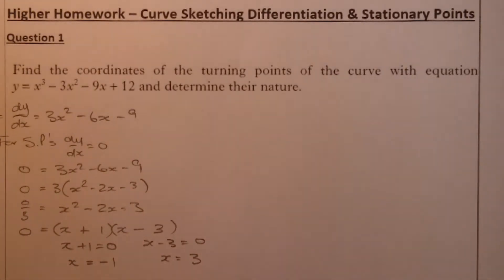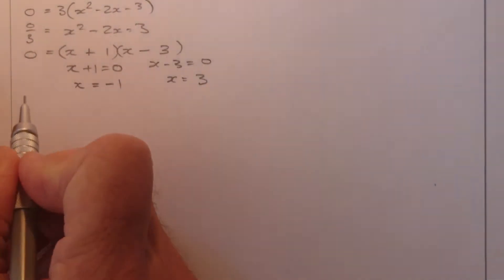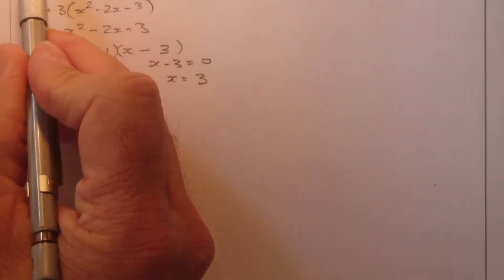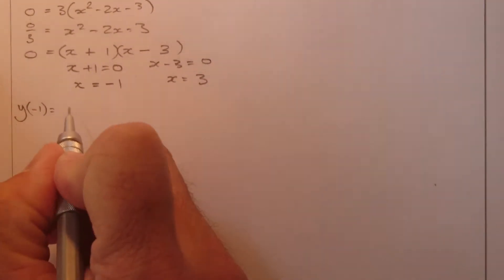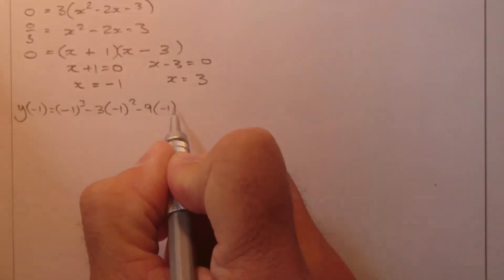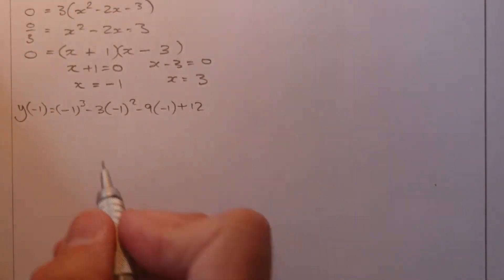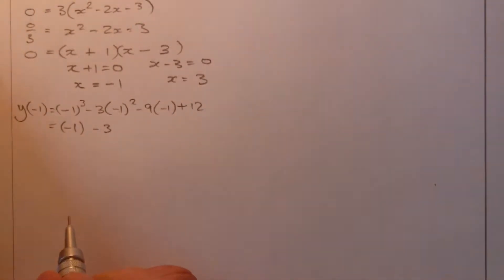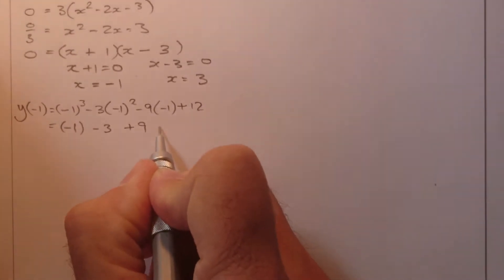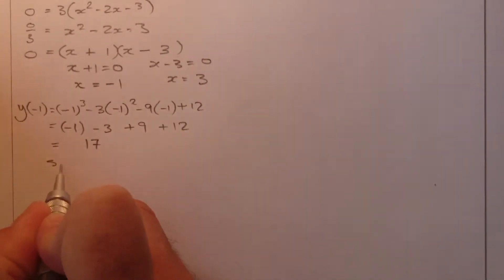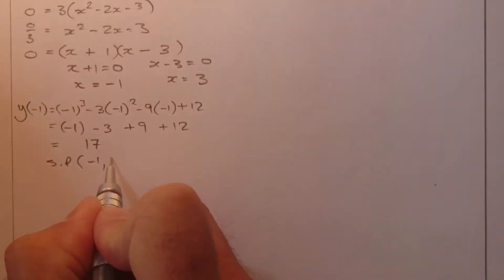So there are my two x-coordinates. I'm now going to find the y-coordinates when x equals minus 1 and x equals 3. I'll substitute x equals minus 1 into the y equation: minus 1 cubed, minus 3 times minus 1 squared, minus 9 times minus 1, plus 12. That gives minus 1, minus 3, plus 9, plus 12, which equals 17. So my first stationary point is at coordinates minus 1, 17.